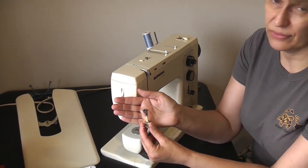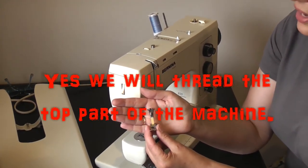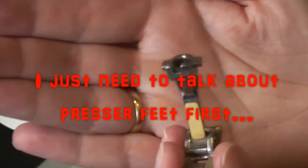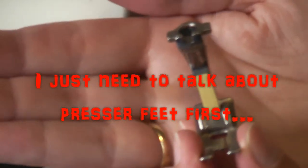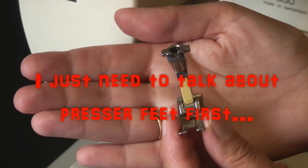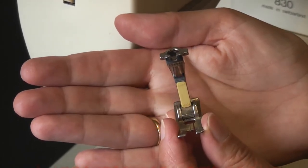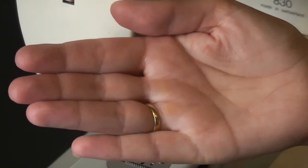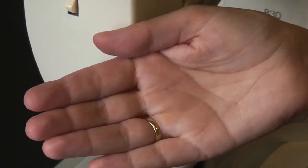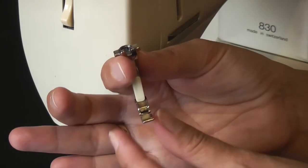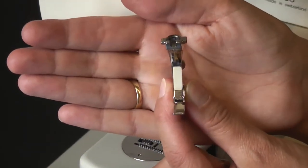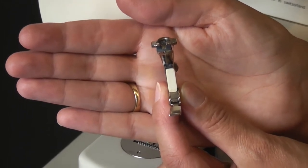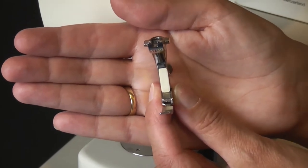Presser feet are actually an integral part of the machine. They hold everything in place. You raise them, lower them, depending on where you're up to when you're sewing. This one here is a standard zigzag or straight stitch foot, used for probably 90% to 95% of your sewing. There are loads of other types of presser feet. The zipper foot looks completely different. It's skinny so that it can run along the edge of a zipper and stitch as close to the teeth of the zip as possible.